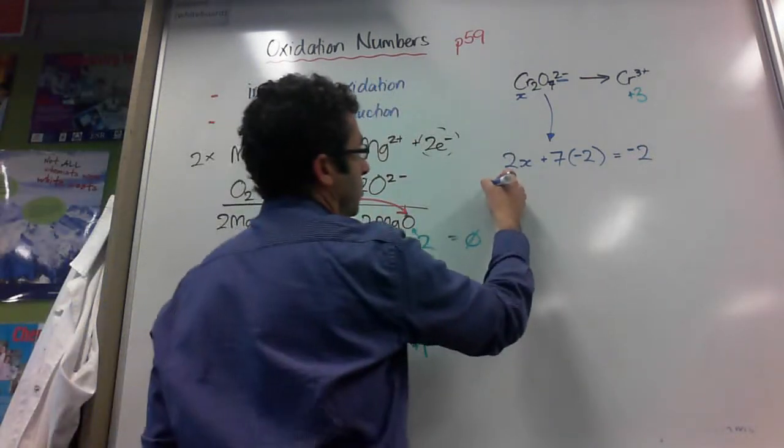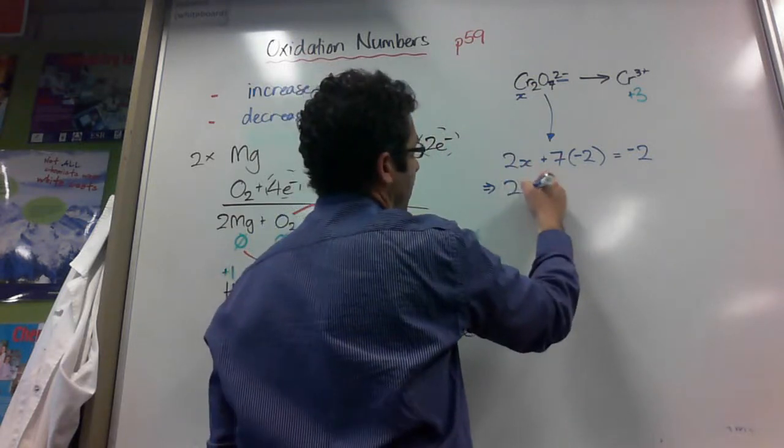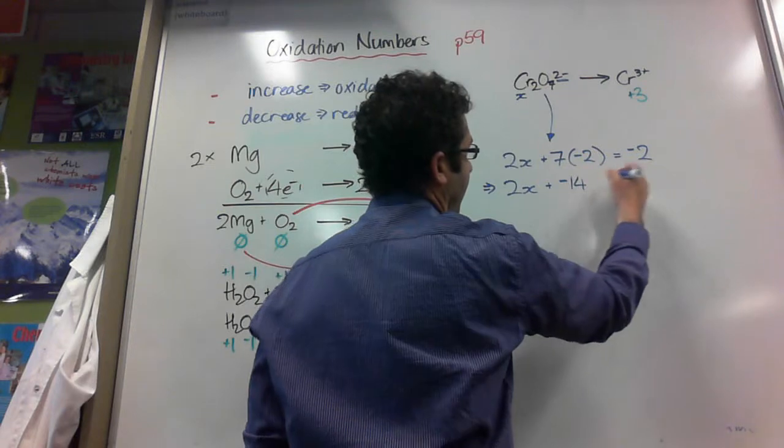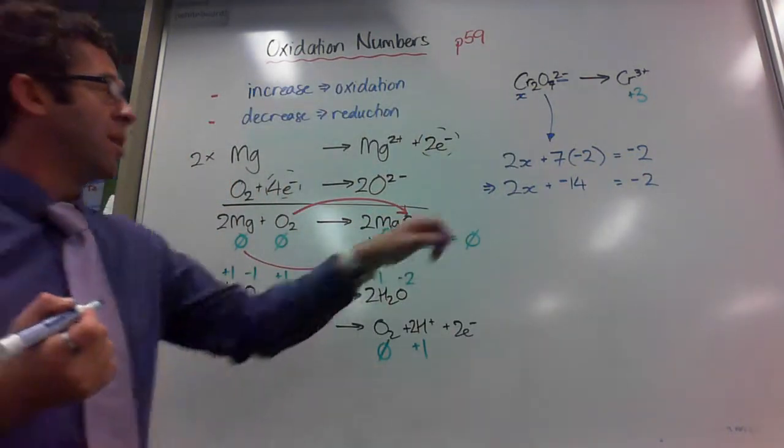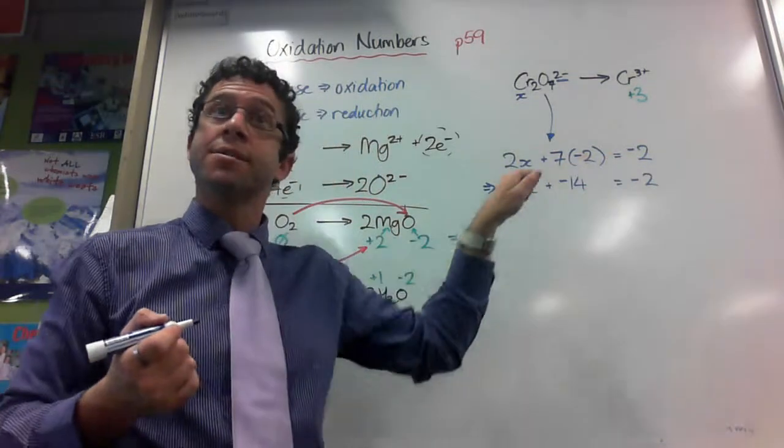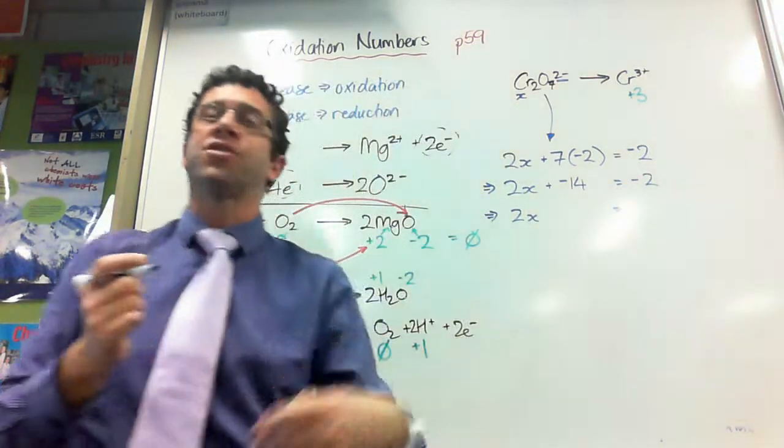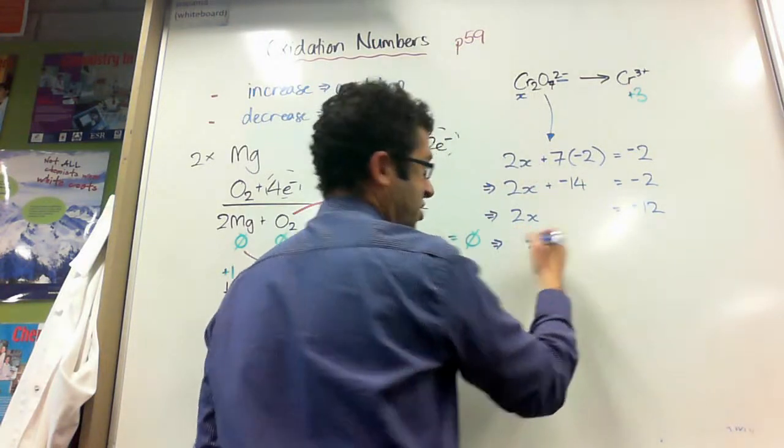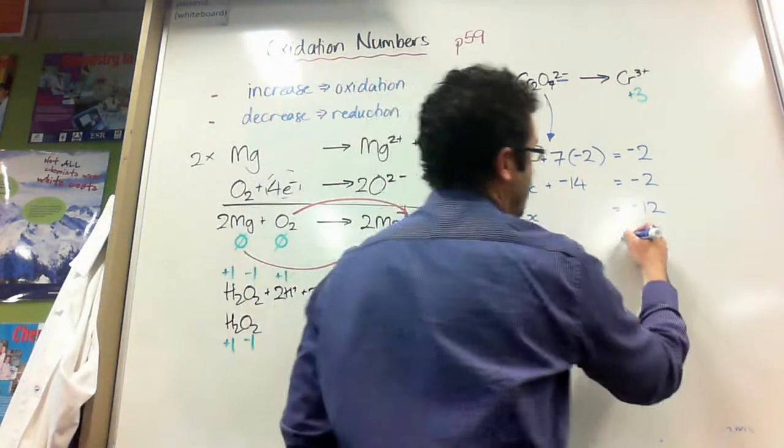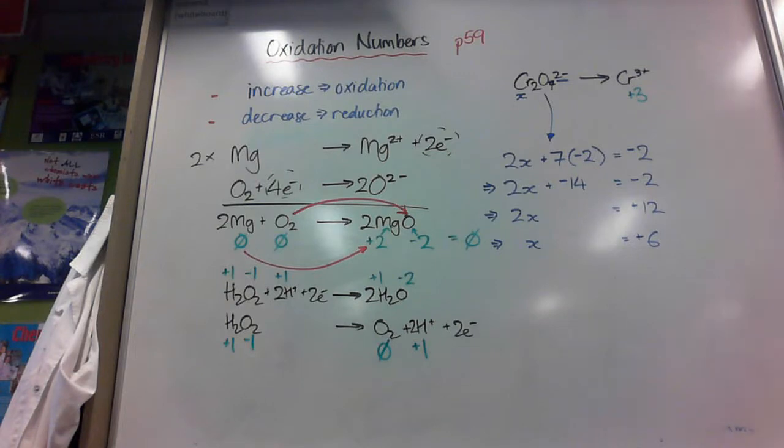So, now I'm going to take this a bit further. Seven times negative 2 is negative 14. So, 2X plus negative 14 equals negative 2. I'm now going to put the 14, I'm going to add 14 to both sides. So, I've got 2X equals negative 2 plus 14 is positive 12. So, X, which is my chromium, is positive 6. And you'll notice that I'm writing the pluses in there when I write oxidation numbers. I like to be very, very clear that it is positive 6.